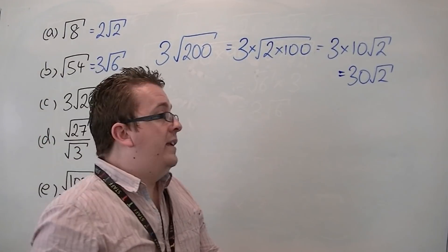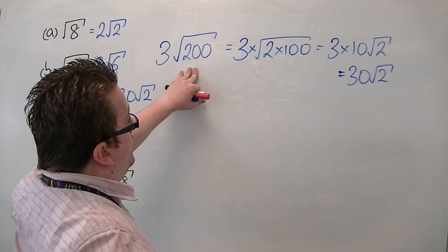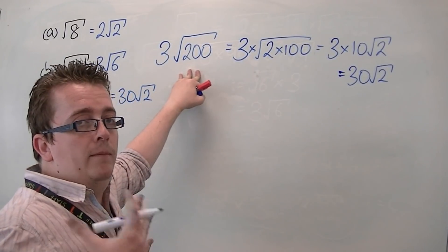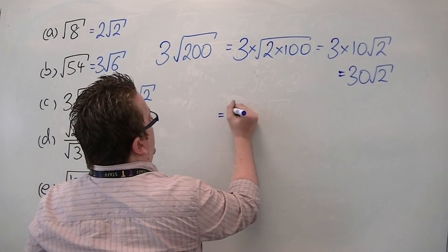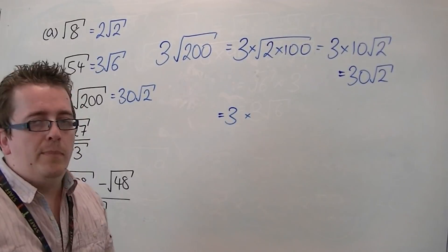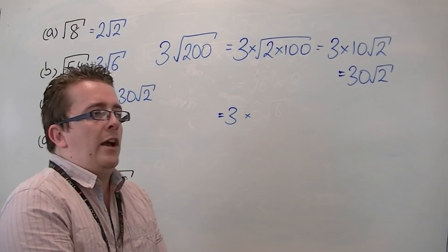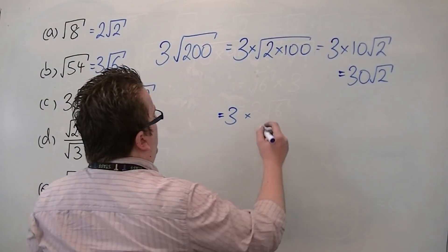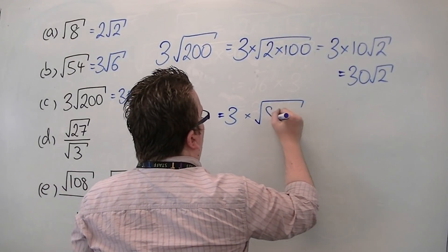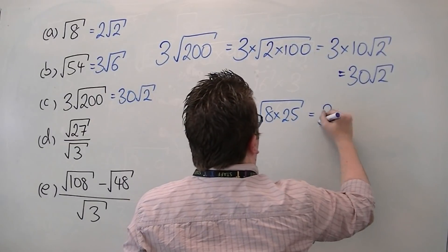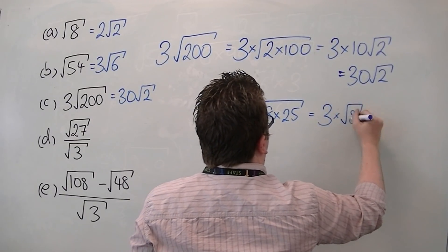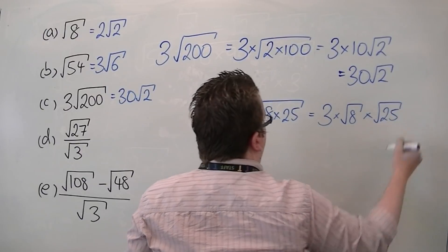So the other method, as I said, is that you could have gone, well, you might have missed that 200 was 2 lots of 100. And you might have said to yourself, well, 25 is a square number. That goes into 200, and it goes in 8 times. So that's 3 times root of 8 times 25, which is equal to 3 times root 8 times by root 25.